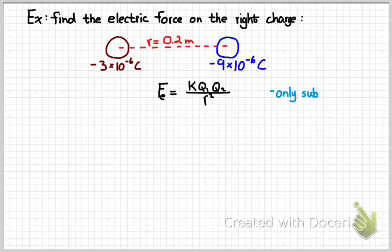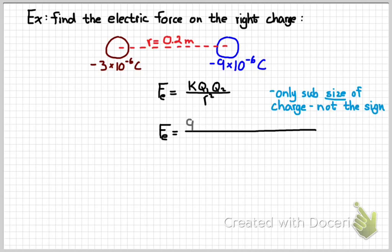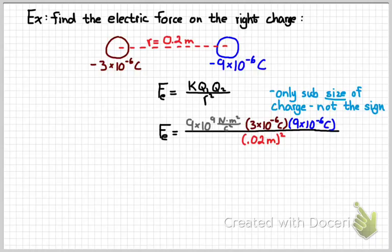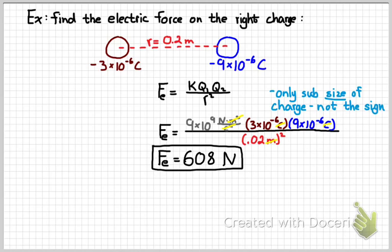Using Coulomb's law, we're only going to substitute in the size of the charge, not the sign. That would look like this. Plug in K. Plug in Q's. And then R. Don't forget to square the R. When we do that arithmetic, we get something like 608. Cancelling out the units leaves us with Newtons.